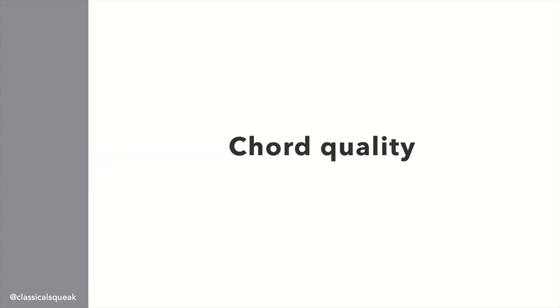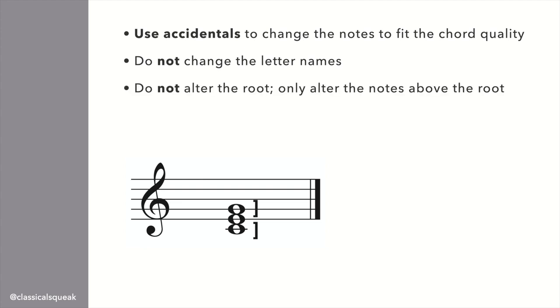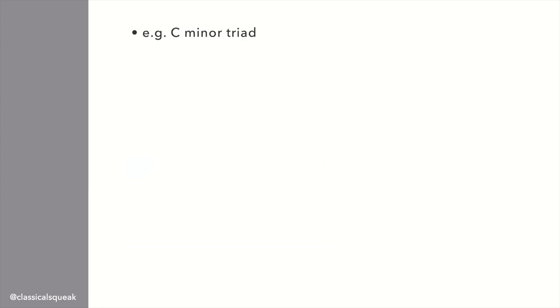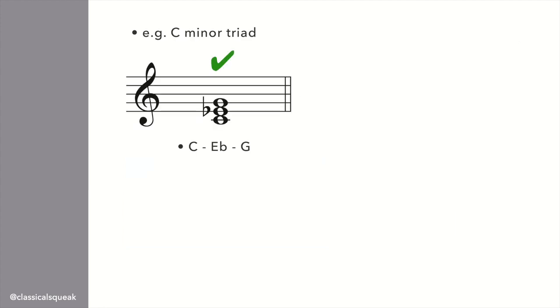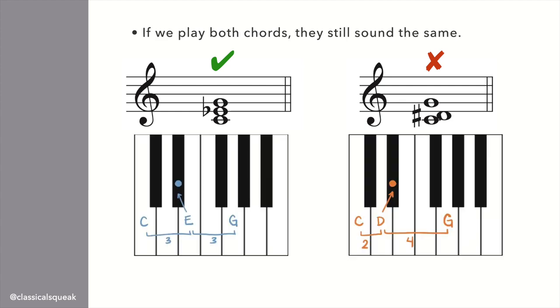Then, depending on the quality of the chord, you alter the notes above the root with accidentals. We want to keep the relationship of thirds, so we alter with accidentals rather than changing the note name. For example, a C minor triad is C, E flat, G, and not C, D sharp, G. Even though visually the distance is the same, the note names C to E is a third, but C to D is a second, and we need stacked thirds.